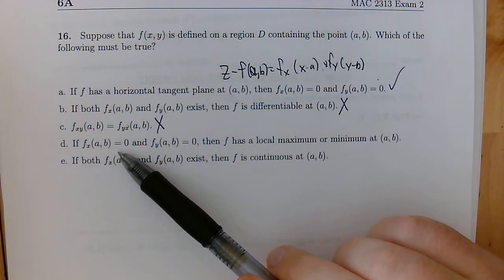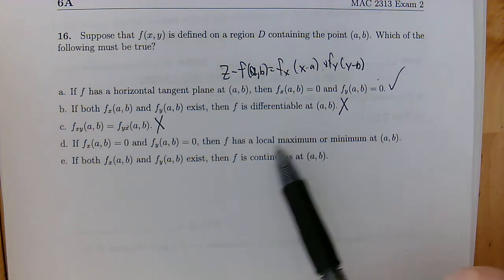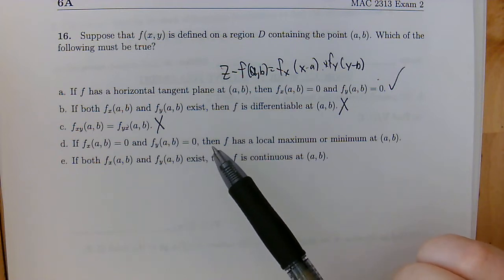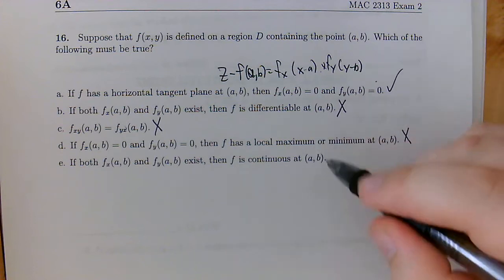If f_x at (a,b) is 0 and f_y at (a,b) is 0, then f has a local maximum or minimum at (a,b). And while that is a possibility, we could also end up having a saddle point there as well. So this doesn't cover all of the possibilities. It doesn't need to be one of these two.